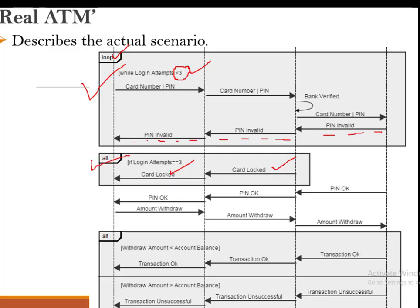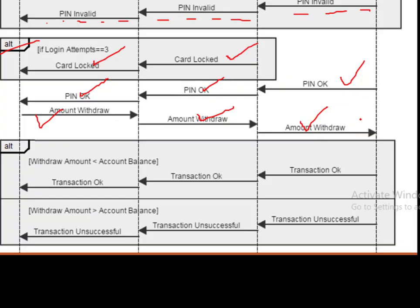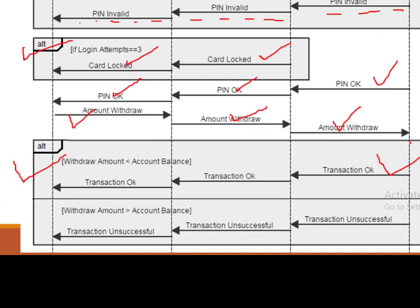If the attempts go beyond two — that is, three attempts — an alternative frame is used to lock the card. If the PIN is correct, the user is prompted to enter the withdrawal amount. That request goes to the bank account, and another alternative frame verifies whether there are sufficient funds. If funds are sufficient, the transaction is successful. If there are no sufficient funds, the transaction is unsuccessful and the card is ejected.